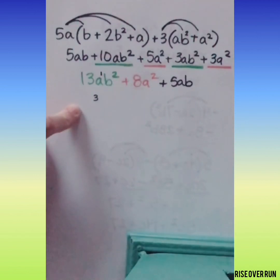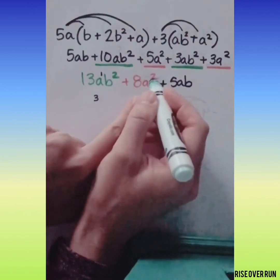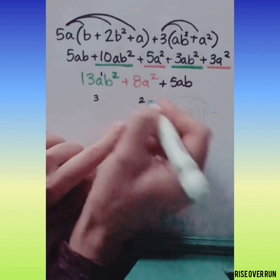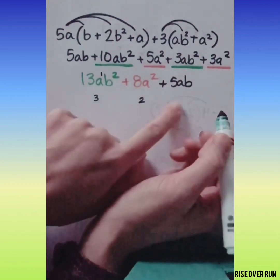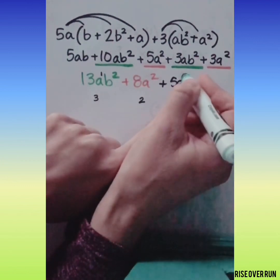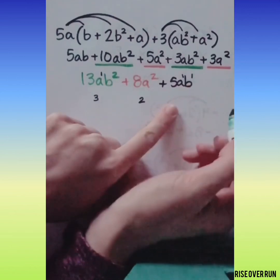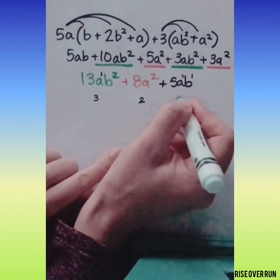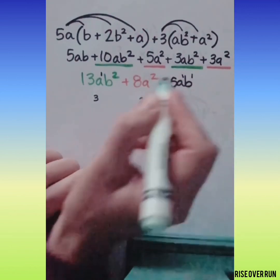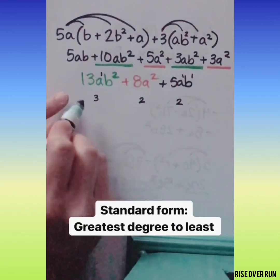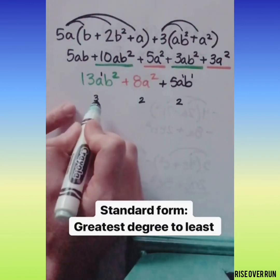This term only has the one variable with an exponent of 2 so it has a degree of 2. This term has two variables, they each have an exponent of 1. That term has a degree of 2, so you want to be sure this is in order from greatest to least by the degree.